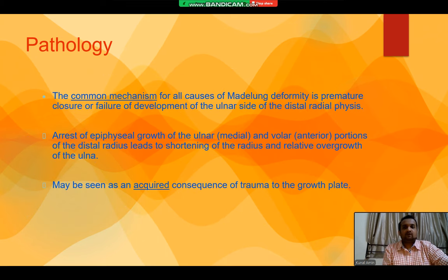The common mechanism for all causes of Merlung Deformity is premature closure or failure of the development of the ulnar side of the distal radial physis. Arrest of epiphyseal growth of the ulnar and volar portions of the distal radius leads to shortening of the radius and relative overgrowth of the ulnar.